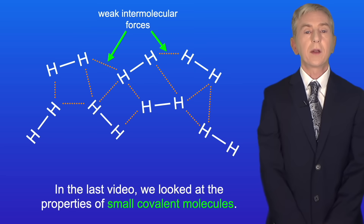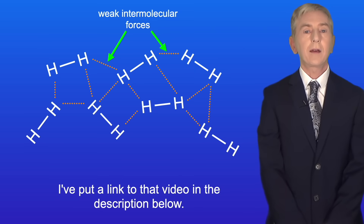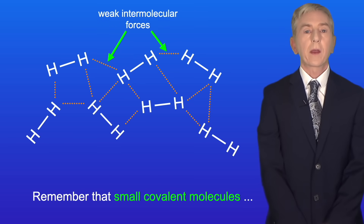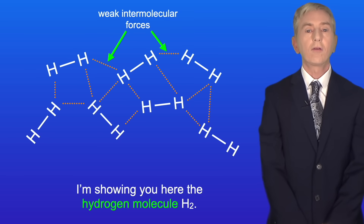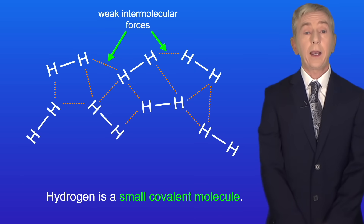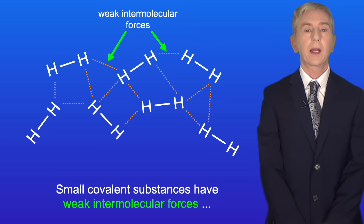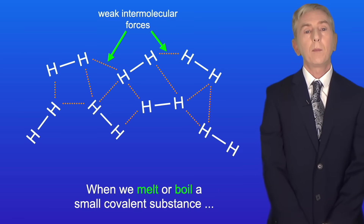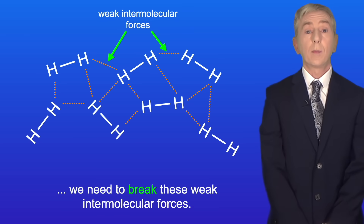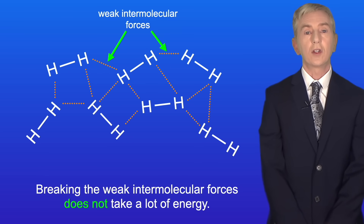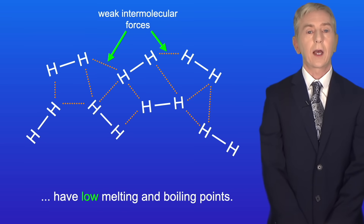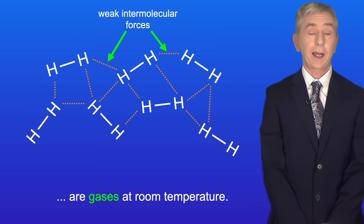In the last video we looked at the properties of small covalent molecules — I've put a link to that video in the description below. Remember that small covalent molecules only have a small number of covalent bonds. Hydrogen (H2) is an example of a small covalent molecule. Small covalent substances have weak intermolecular forces between the molecules. When we melt or boil a small covalent substance we need to break these weak intermolecular forces, which does not take a lot of energy. Because of this, small covalent substances have low melting and boiling points, meaning that most are gases at room temperature.